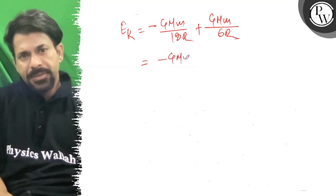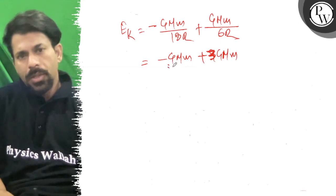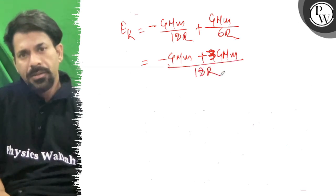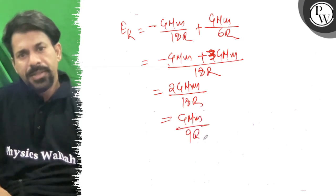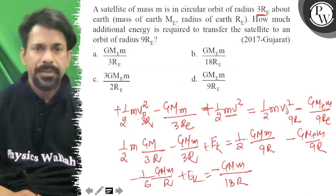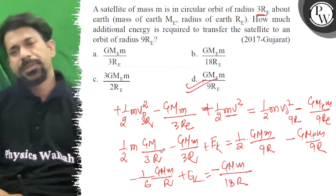Minus GMm plus 9GMm... sorry, 3GMm over 18R. So this will become 2, so twice of GMm upon 18R, so finally GMm by 9R. That is additional energy required, so GMm by 9R. Option D is correct. All the best.